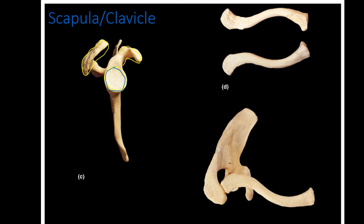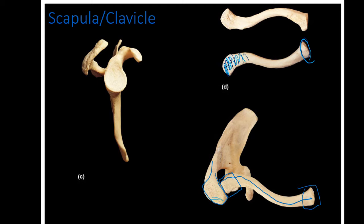The glenoid cavity is essentially the socket portion of the ball and socket joint of the shoulder. From a superior view, we can see the acromion and where it articulates with the clavicle. The clavicle has two sides: the acromial end and the sternal end. The acromial end is flat while the sternal end is more rounded. This makes sense because the acromial side must articulate with the flat acromion — form follows function.